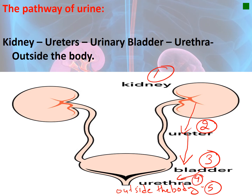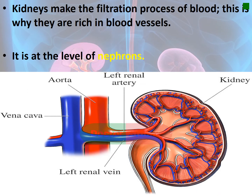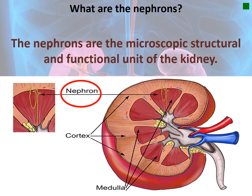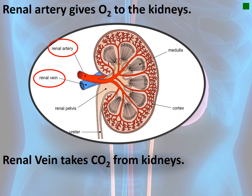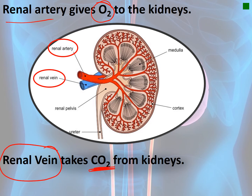The kidneys perform the filtration process of the blood, which is why they are rich in blood vessels. This process occurs at the level of the nephrons. Nephrons are the microscopic structural and functional unit of the kidney. The renal artery supplies the kidneys with O₂, while the renal vein takes out CO₂ from the kidney.